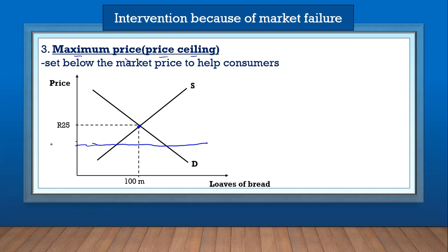The maximum price is a horizontal line set below the equilibrium price — let's say the maximum price is 20 rands. No producer or seller is allowed to charge more than 20 rands. At this maximum price, the demand is more: the maximum price cuts the demand curve at one point and the supply curve at another, meaning there's more demand than supply. So this maximum price will result in a shortage in the market.